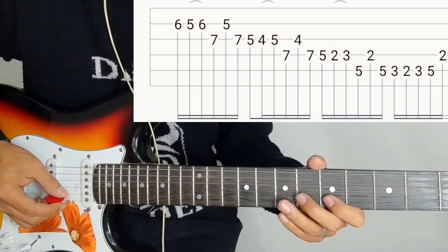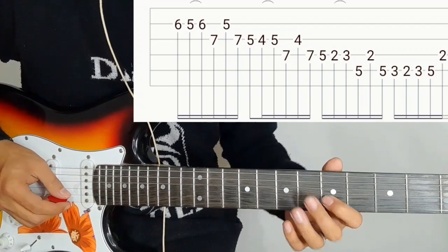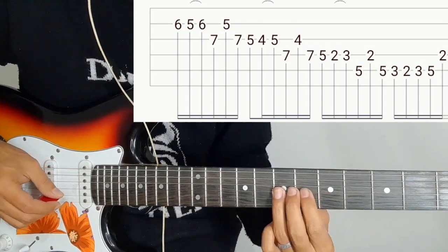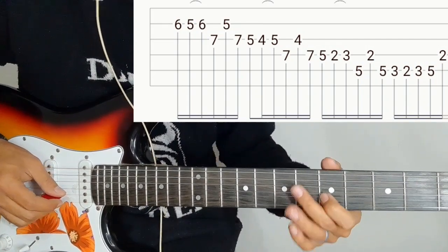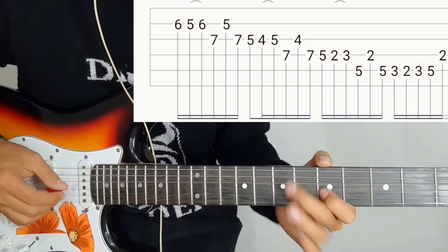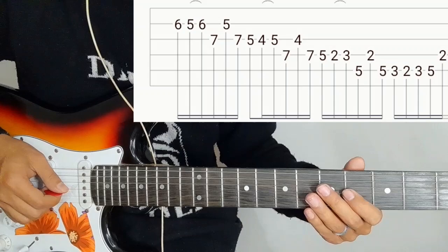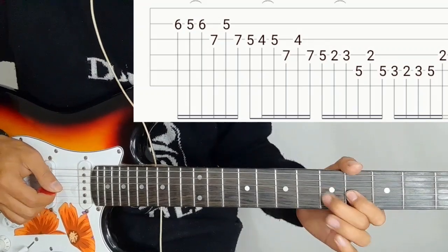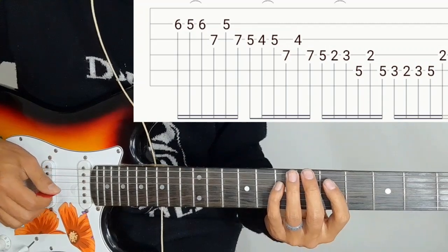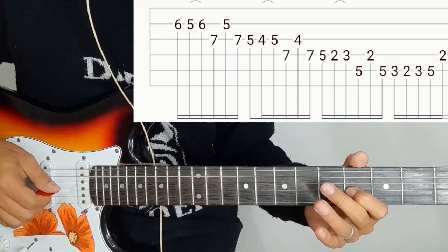Second string goes 6-5, 5-6-3 hammer-on. 4th string 7-7, 5th string 5, 4th string 5. 5th string 5 hammer-on. 4th string 7.